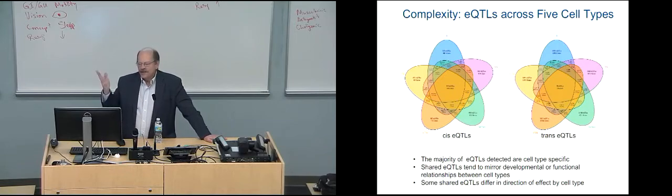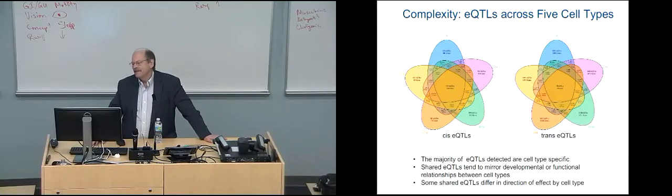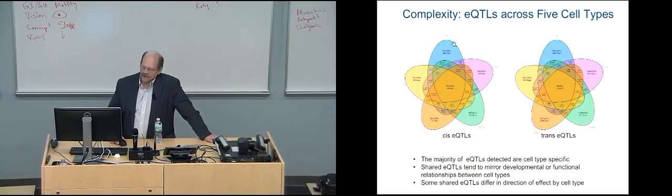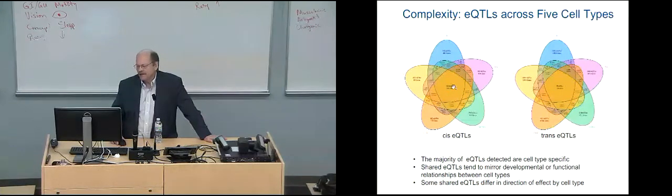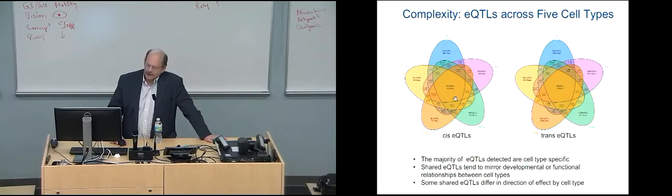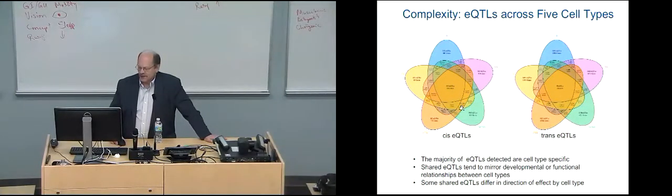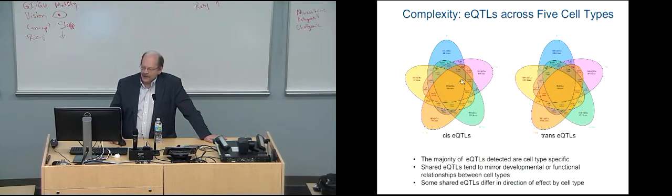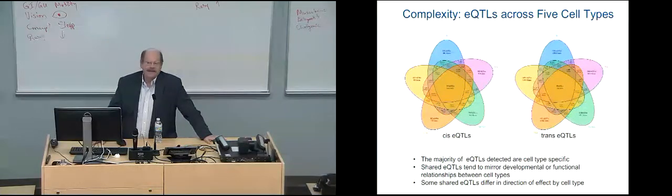When you start thinking about type 1 diabetes, you think about the complexity of the different tissue types. I already told you that type 1 diabetes has its list of credible SNPs and T cells and B cells. So if you think, you should get the same thing, it doesn't work that way. We've looked at cis-eQTLs where it's close to the SNP or trans-eQTLs. It turns out that majority of the cis-eQTLs certainly are cell type specific. The GTEx project has made some recent publications about the number of tissue types. It's a very complicated system. The shared eQTLs, which are the ones in this pentagon, tend to mirror developmental or functional relationships of cell types. Some of the shared eQTLs differ in direction of effect by cell type.